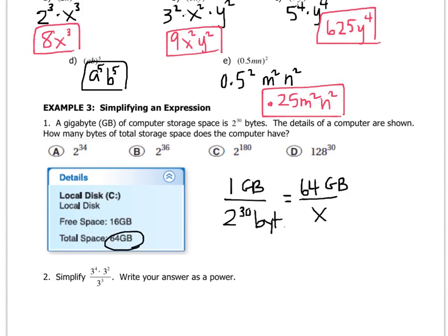So the computer has 64 gigabytes. So I'm going to create a proportion because if 1 gigabyte is 2 to the 30th bytes, then 64 gigabytes is how many bytes? And then you say, well, if I take my calculator, it doesn't fit. I can't, it just says like overflow or something. Or you get some weird looking number.